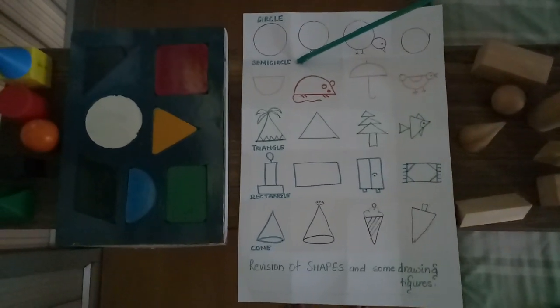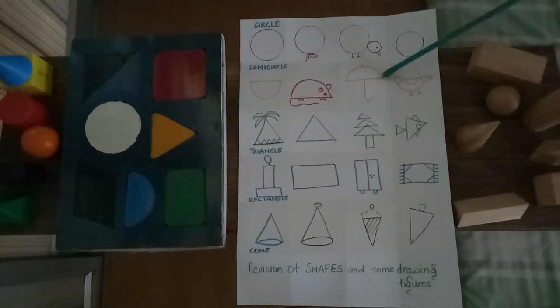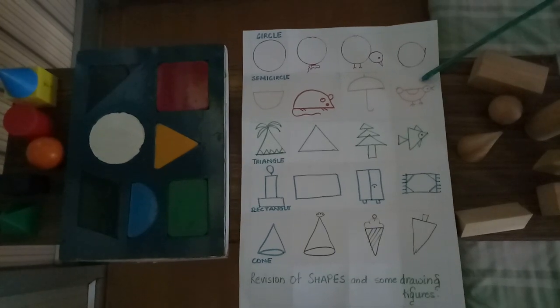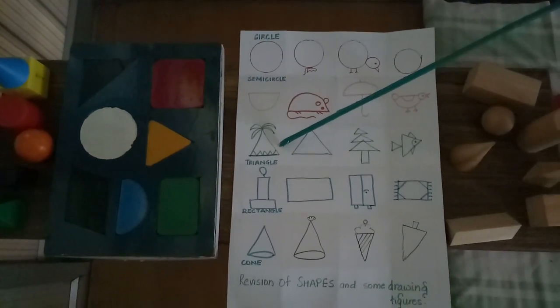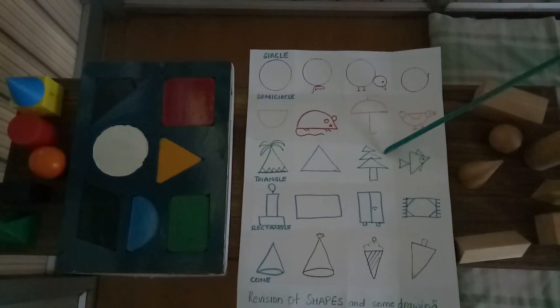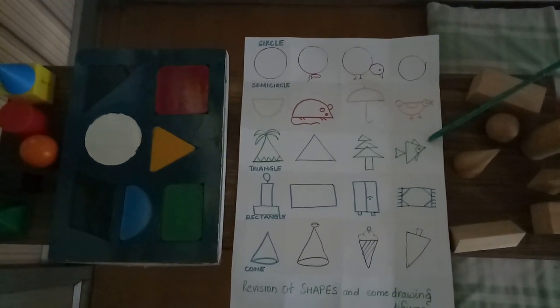Then semi-circles: a rat, umbrella, and a bird. If you take a shape triangle, you can show him a hut, teach him to draw a Christmas tree and a fish.